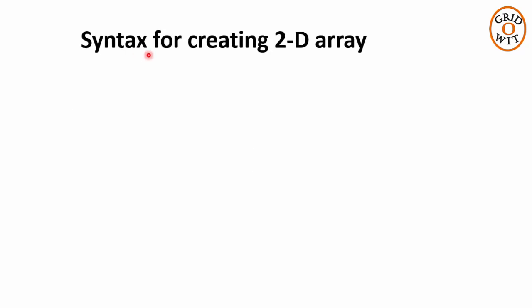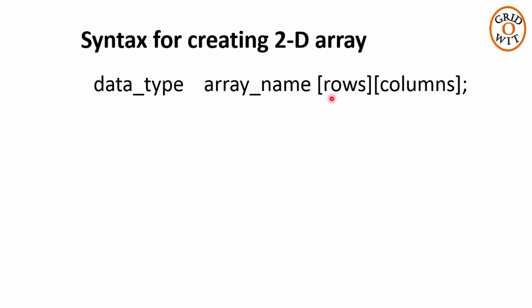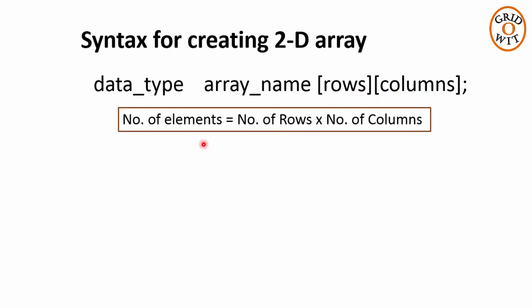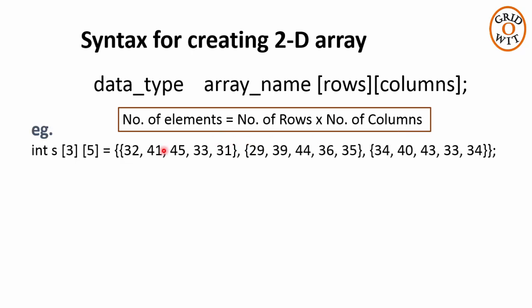Now the syntax is data type, space, 2D array name. Then there are two constant values in the square brackets. First tells the number of rows and second tells the number of columns. The total number of elements in a 2D array can be calculated by multiplying the number of rows to the number of columns. Here in this example, the number of elements are 3 into 5, that is 15. You can assign all the 15 values while declaration through this syntax.